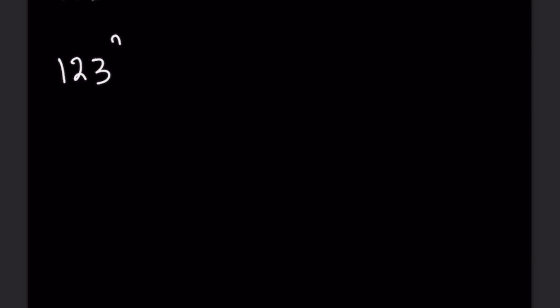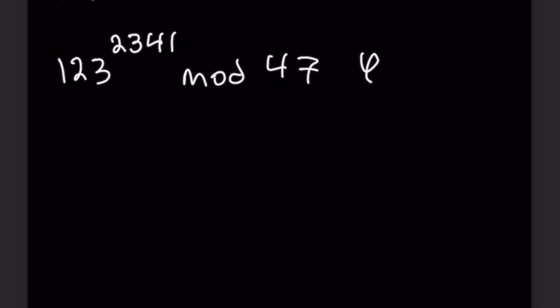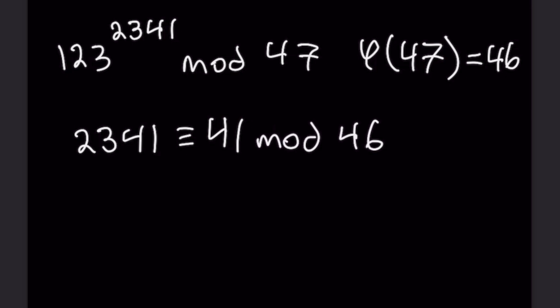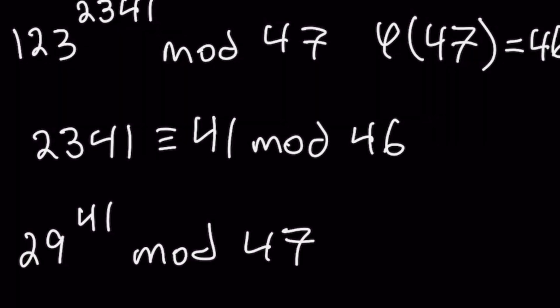Now we reduce 123^2341 mod 47. Since 47 is prime, φ(47) = 46. We reduce the exponent 2341 mod 46: 50 × 46 = 2300, so 2341 ≡ 41 (mod 46). For the base, 123 ≡ 29 (mod 47) by simple arithmetic. That gives us 29^41 mod 47. Working this out, the result is congruent to 40 (mod 47).